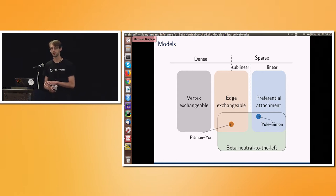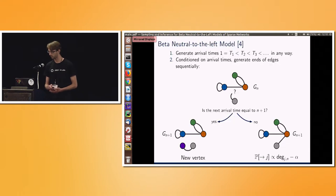So I'm going to go now over the details of beta-neutral-to-the-left models, this non-exchangeable class, and then talk about what the substructure is that unlocks inference. So we begin by generating a sequence of arrival times. So the arrival times, as you'll recall, are the first time when a vertex is seen in the network. So if you remember that original example, the EY vertex turned up, I think it was time step three. So EY's arrival time is three.